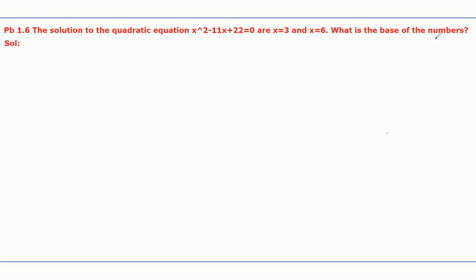What is the base of the numbers? We have to find the base value for the given solution numbers x equal to 3 and x equal to 6 for the given quadratic equation. To find the base, let us assume that these two are in the decimal number system and check whether they are exact solutions for the given quadratic equation or not.